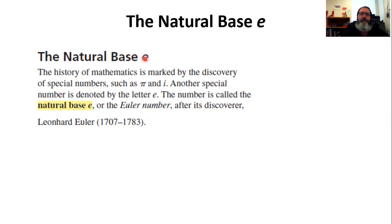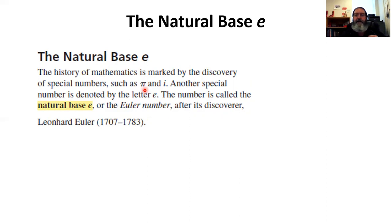So what is the natural base E? E is a number — it is very similar to pi. It is a constant; there is a set value for E. E represents a specific number, a specific value. Much like pi, which you know is an irrational number — 3.14159 — it goes on forever, never repeats, never ends. It's the definition of irrational.